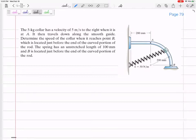Five-kilogram collar has an initial velocity of five meters per second when it's at A, and then travels along the smooth guide to determine the speed of the collar when it reaches point B. Make sure for all of these problems that you can visualize where is it starting, where is it ending. This one starts at A, and then it goes to B.